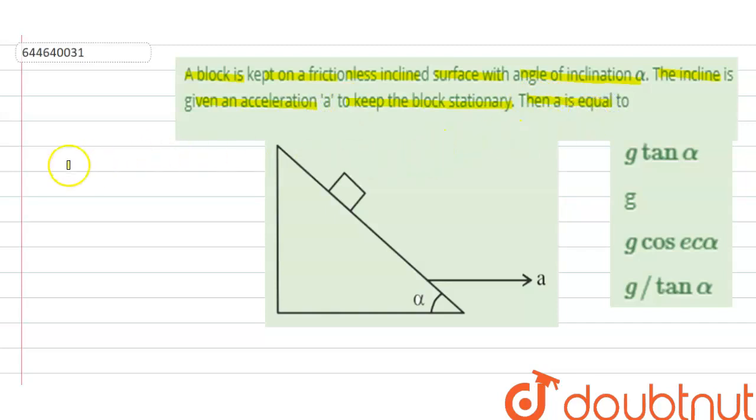So this question is based on the chapter laws of motion. Let us draw the free-body diagram of this body. Suppose its mass is small m. Its weight acts vertically downward, that is mg.